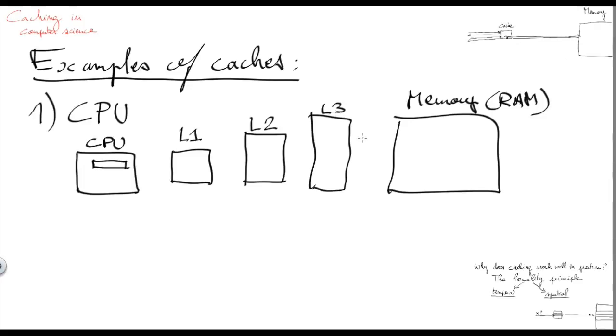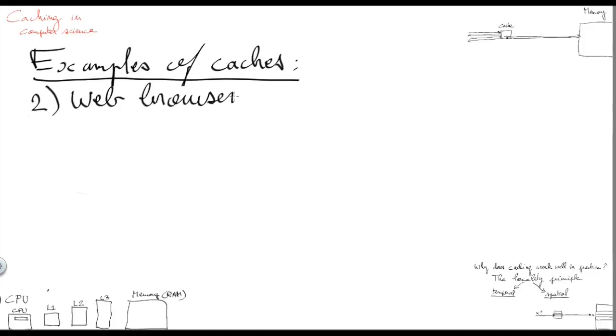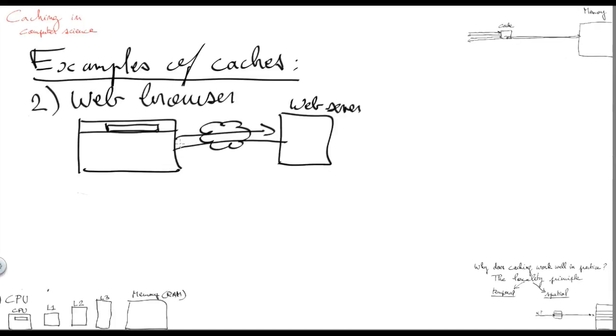The second example is the cache managed at the application level, completely at the software level, within a web browser. Let's assume you have a web browser and you want to download an image stored on a web server. The browser will issue a request over the internet to contact the web server and the web server will reply with the requested file. Before displaying the image on the screen, the web browser application will actually save a copy of the file on the local disk in the hope that if the same user requests the same image once again in the future, it can avoid a long round trip over the network and instead get a local copy.